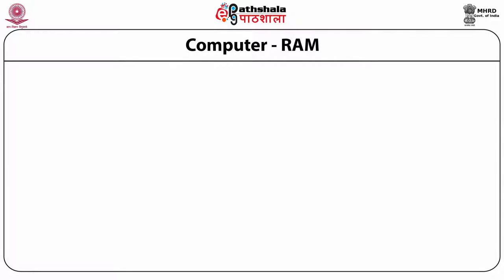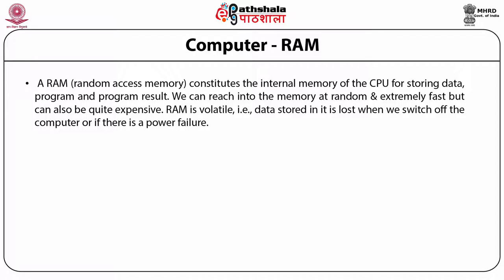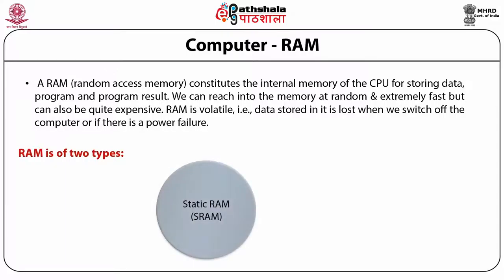Random access memory RAM constitutes the internal memory of the CPU for storing data, programs and program results. We can retrieve the information from this memory at random and extremely fast but it is expensive. RAM is volatile and the data stored is lost when we switch off the system or if there is a power failure. There are two types of RAM: static RAM or SRAM and dynamic RAM or DRAM.